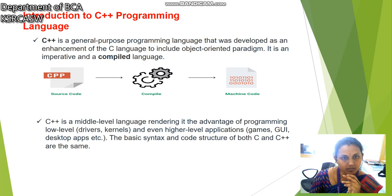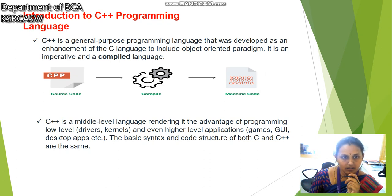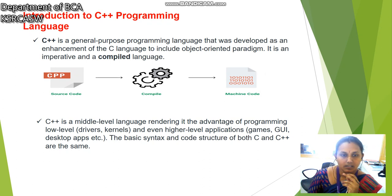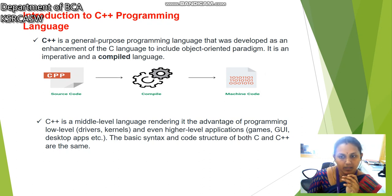C++ is derived from the basic language C. C++ is a general purpose programming language. It was developed as an enhancement of the C language. Source code written in C++ can be compiled and converted into machine code. C++ is a middle level language — it is an advancement over low level language and also supports higher level applications.